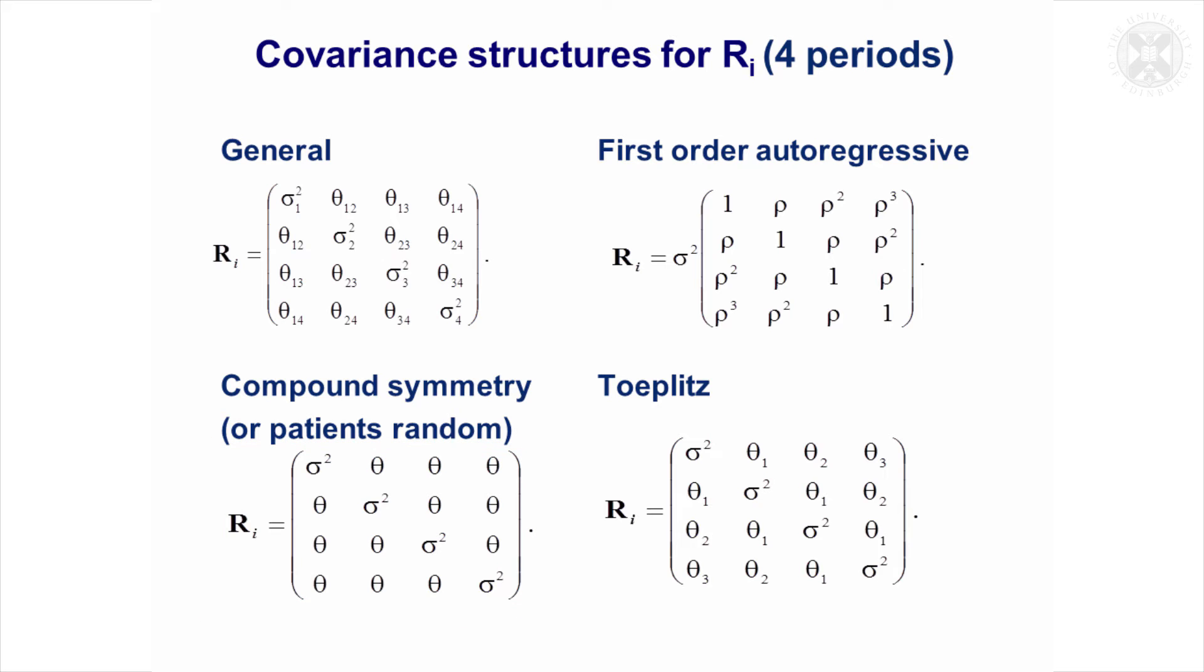Another fairly simple structure is this autoregressive one, and that assumes that the correlations decay exponentially as the visits or the time points become more widely separated. That can be a useful one too, and that only uses one extra parameter. We've just got this rho parameter and the variance term.